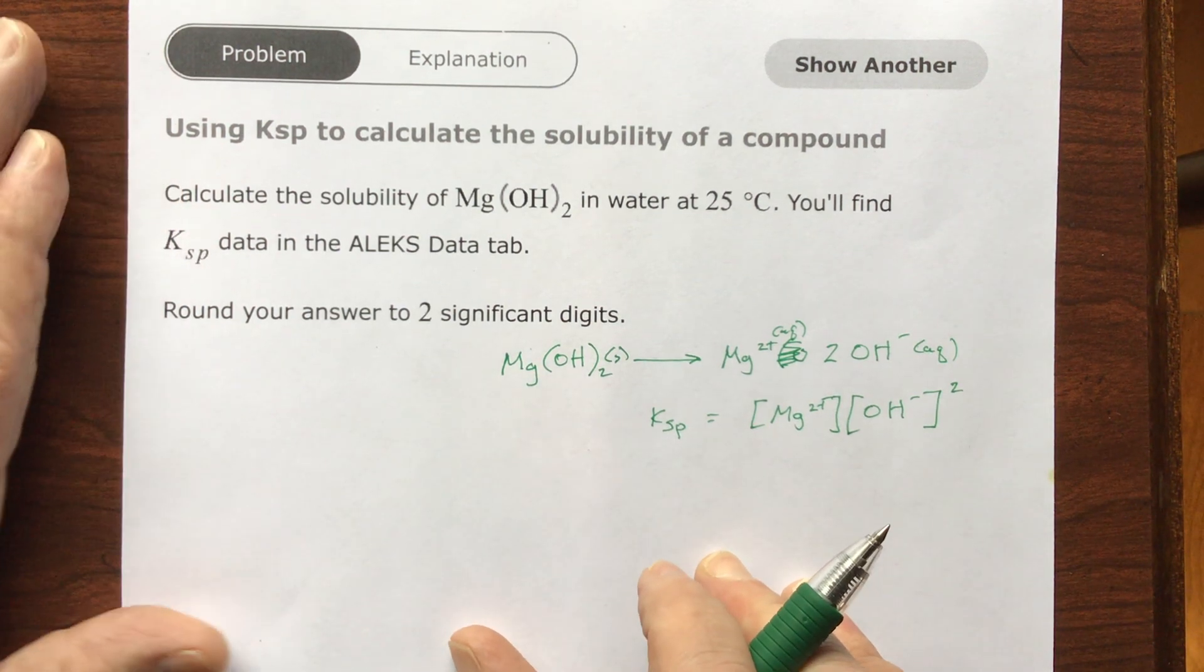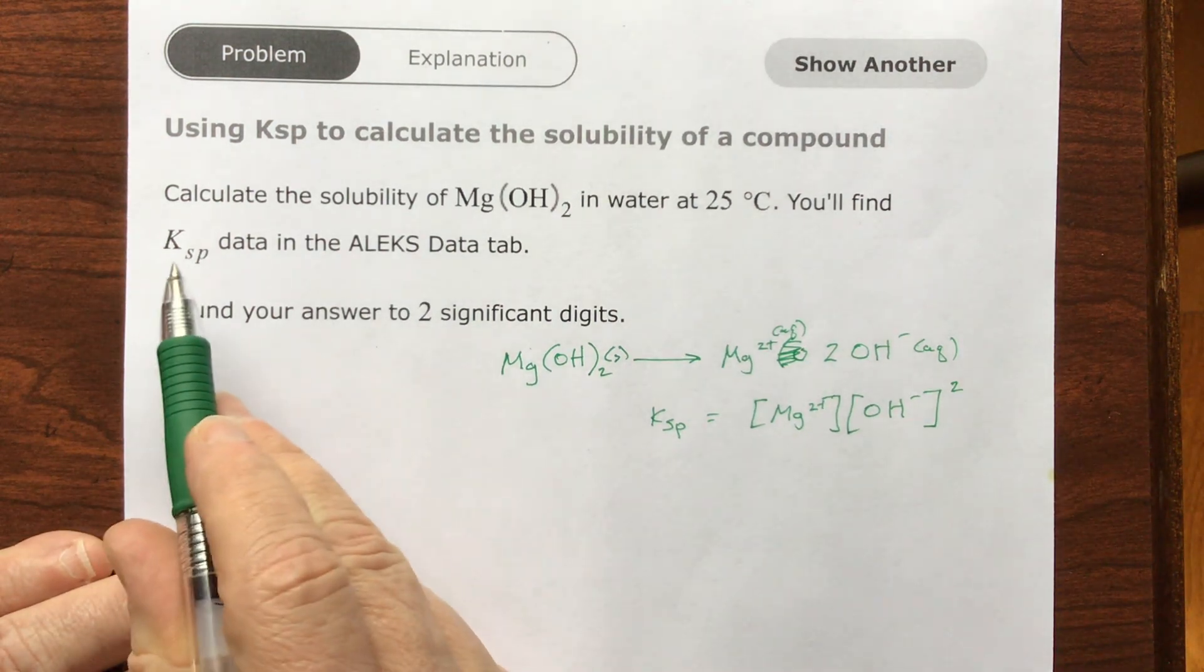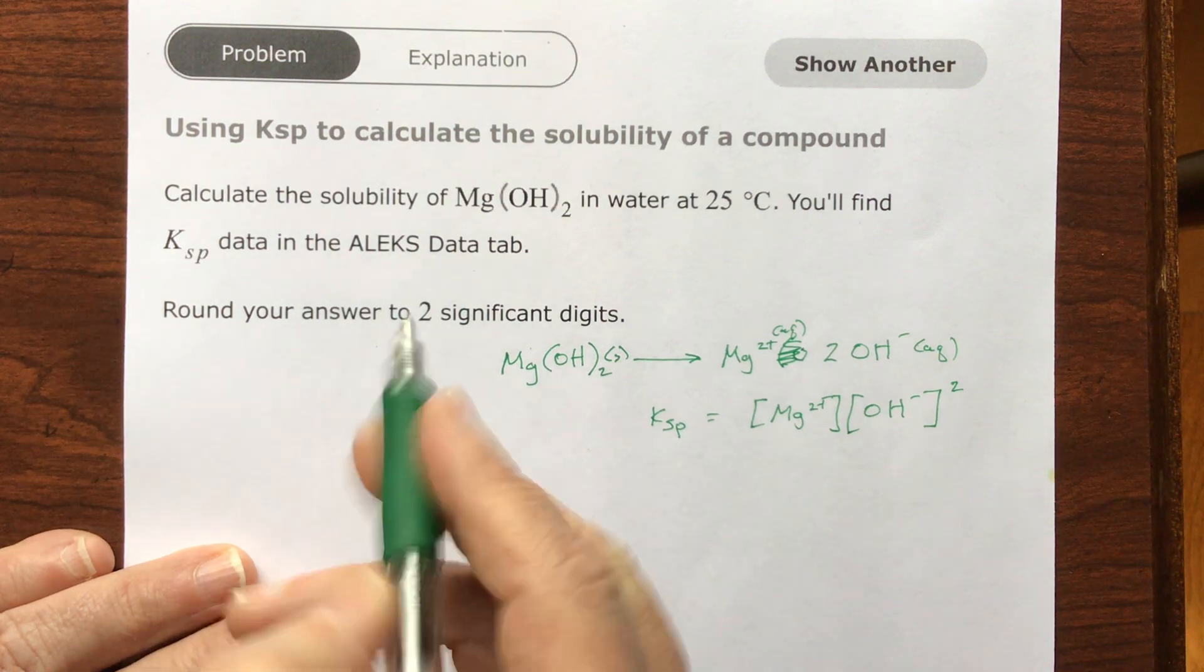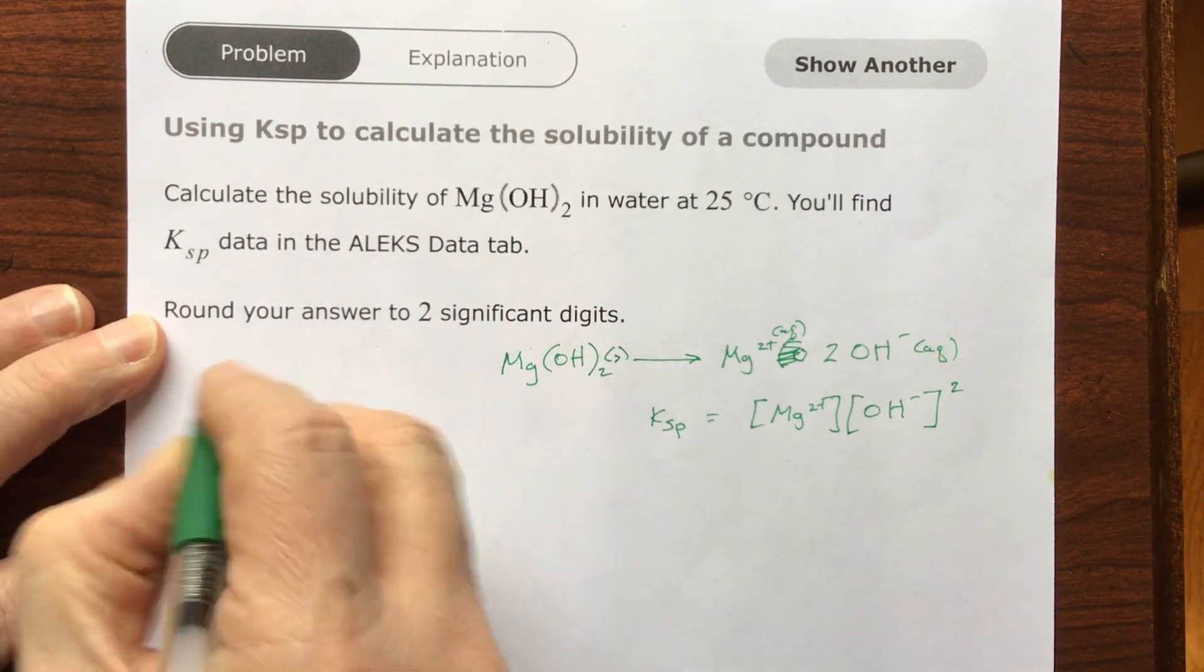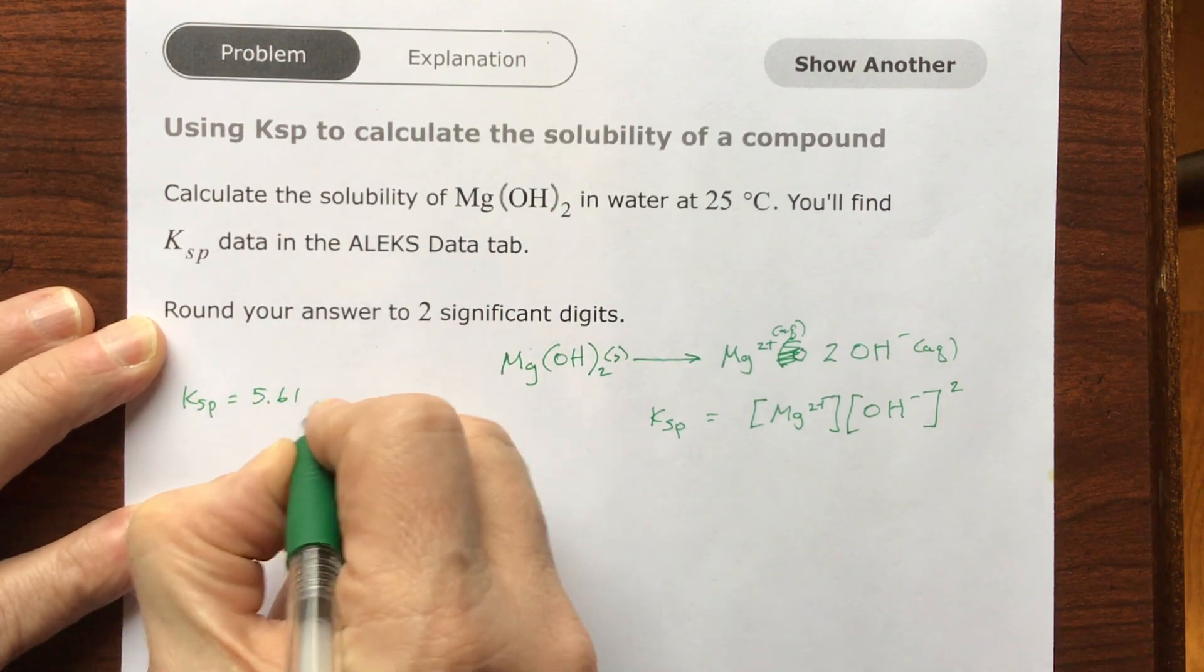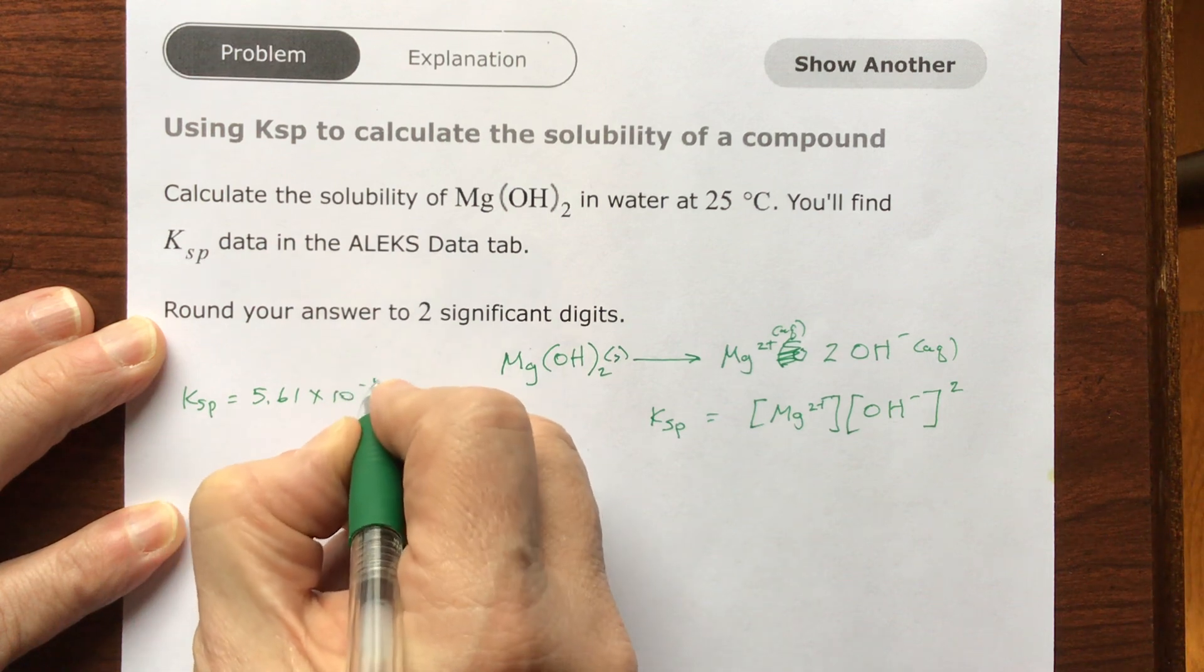Now I don't know the Ksp of magnesium hydroxide, but I can look it up. In the ALEKS data tab, you can find this listed, and it's going to be, so the Ksp of this equals 5.61 times 10 to the minus 12.